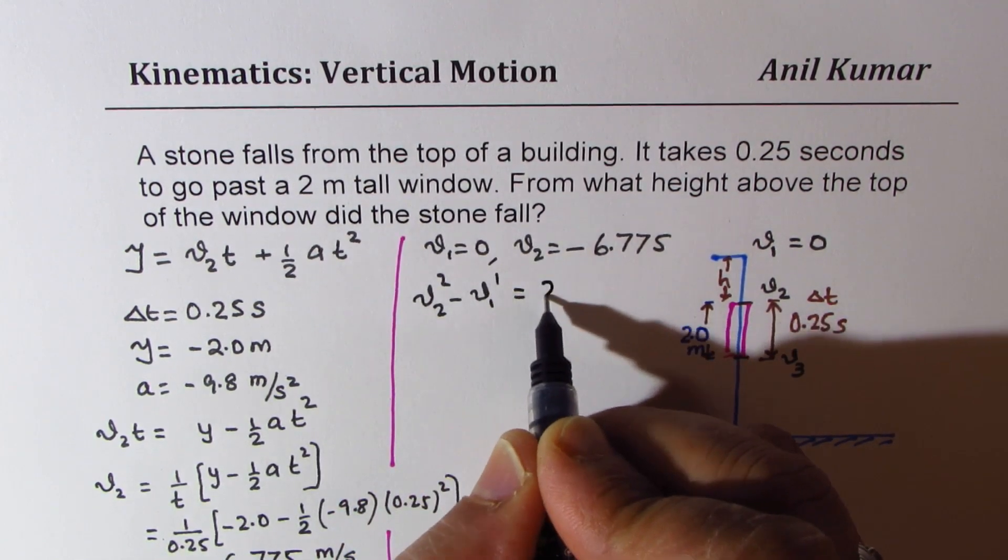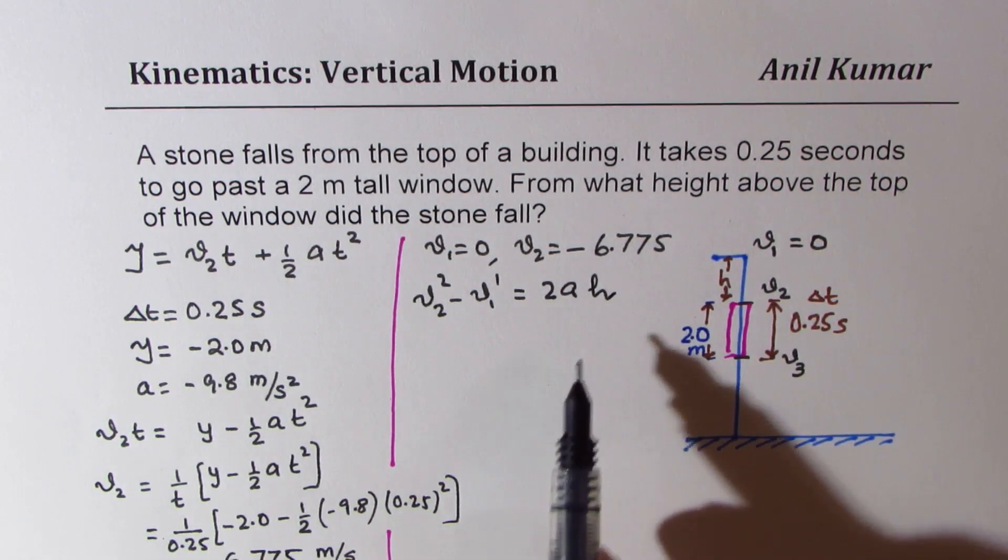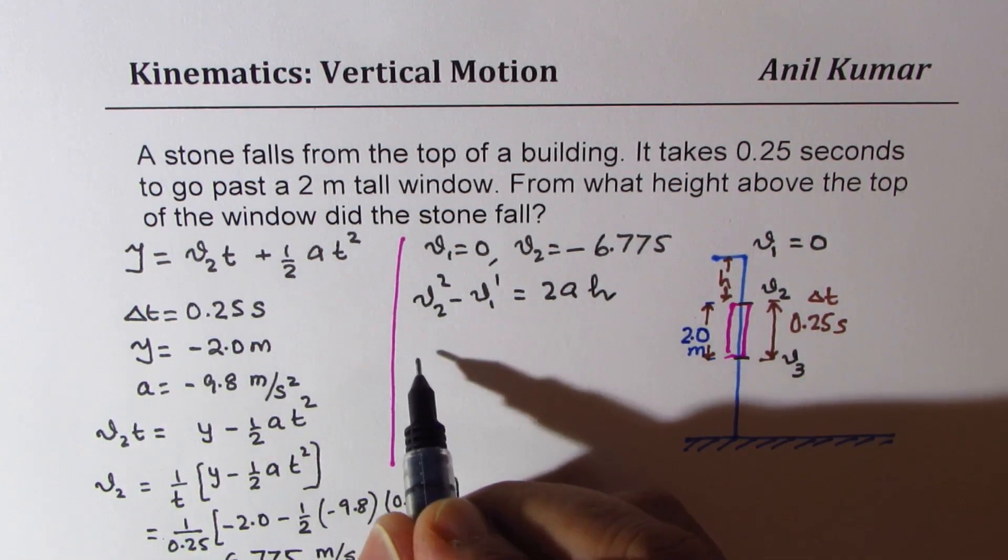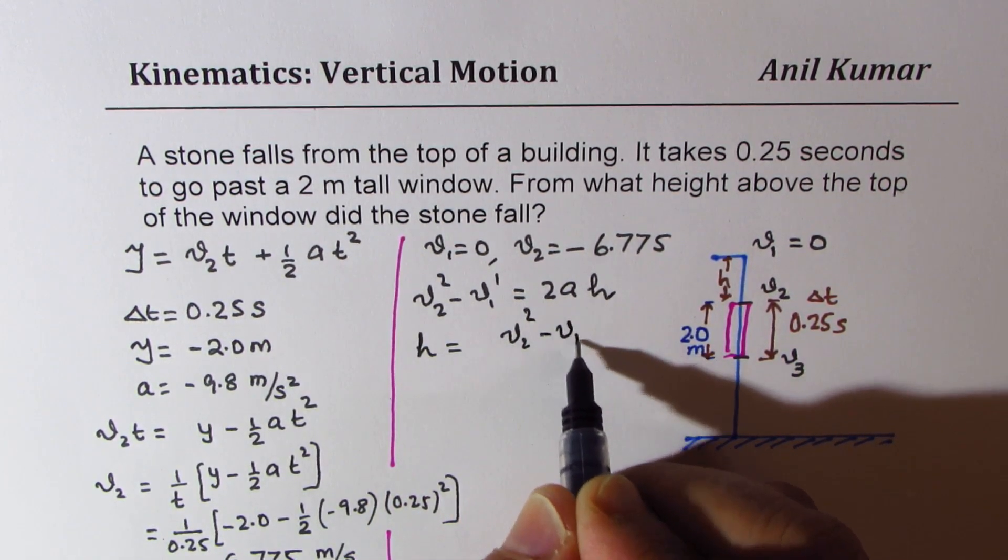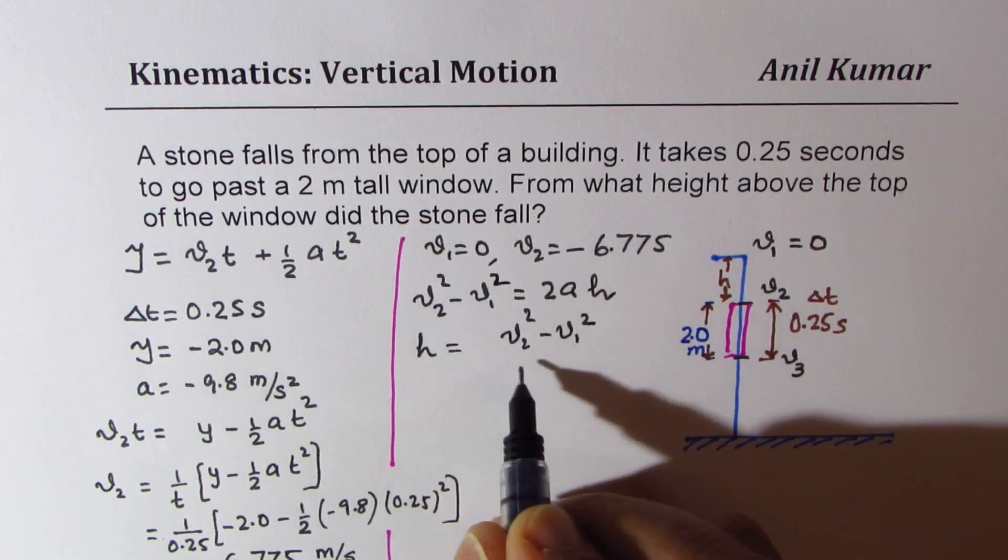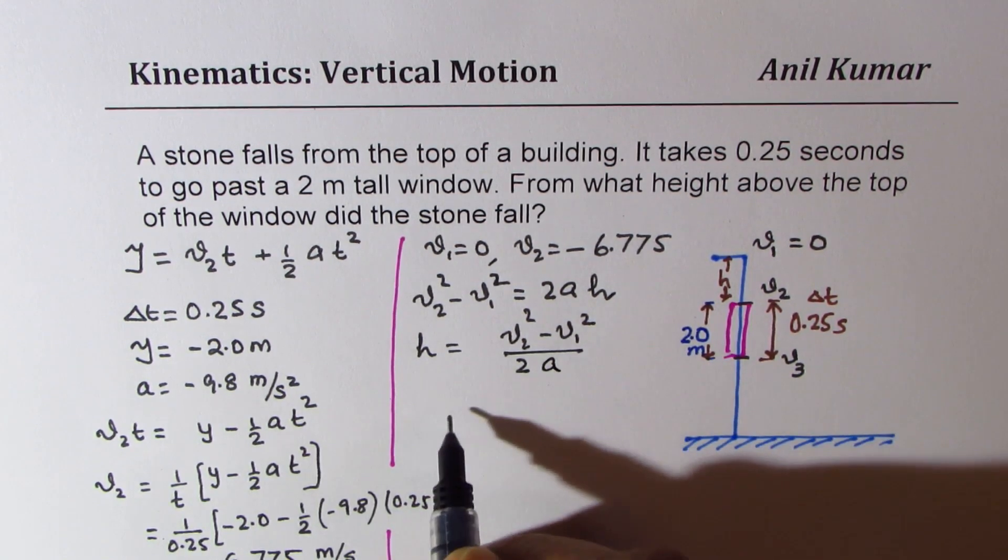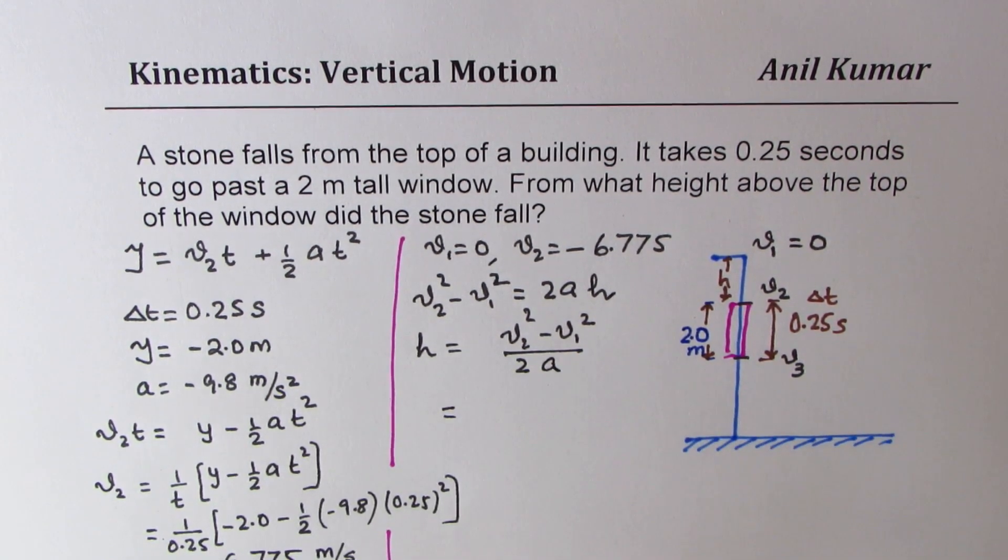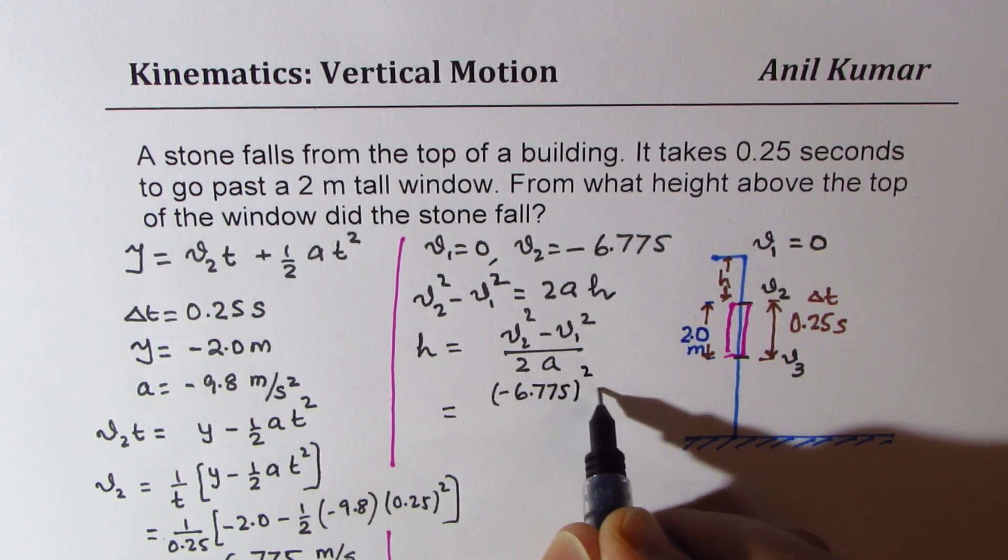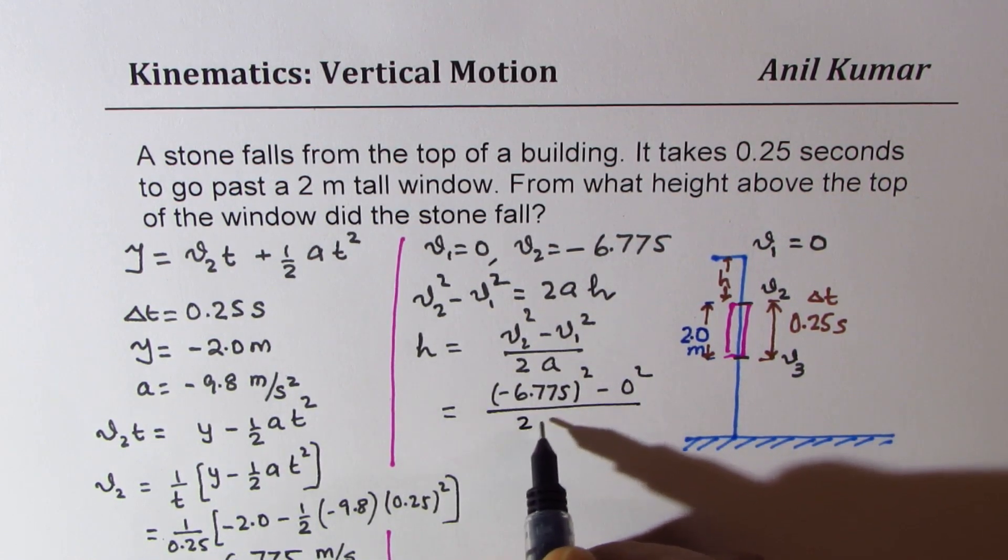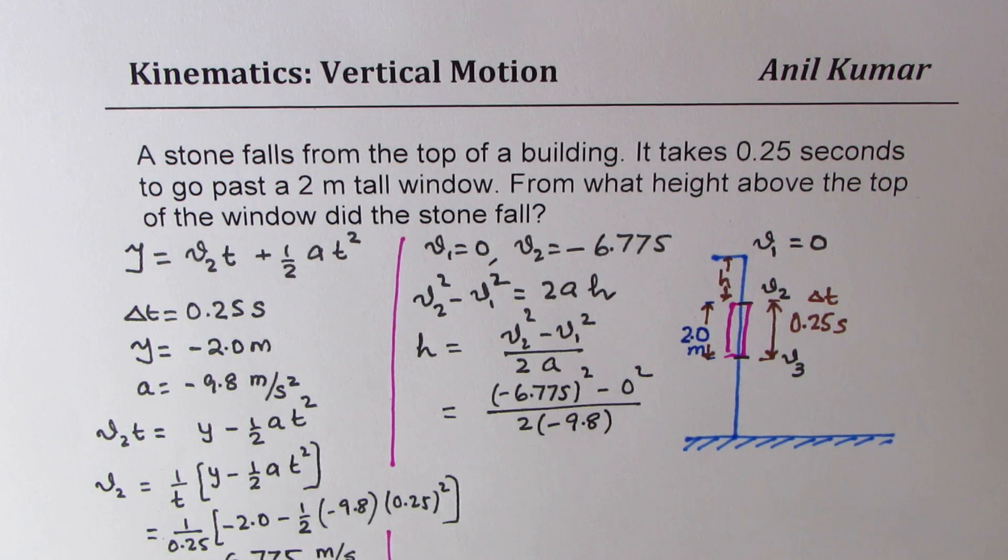This is twice a times the height. From here we can find the height, so height h equals v2^2 minus v1^2 divided by twice a, which is 9.8. Let's substitute the values.